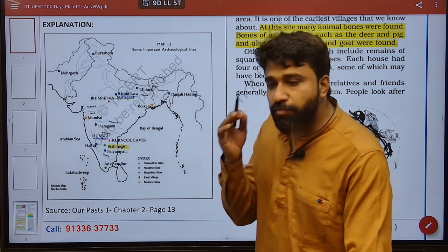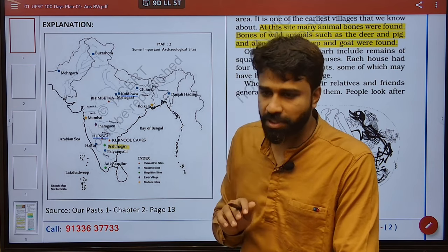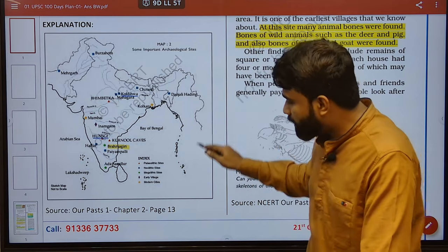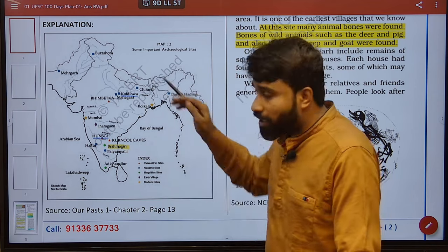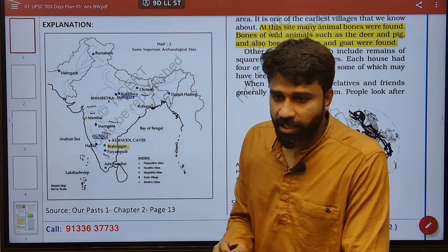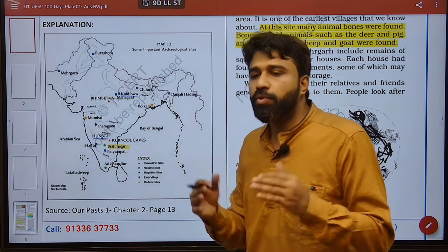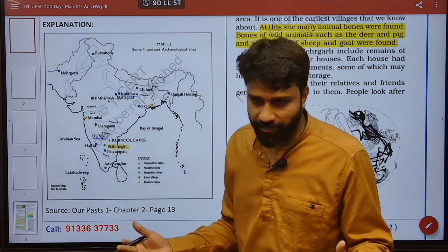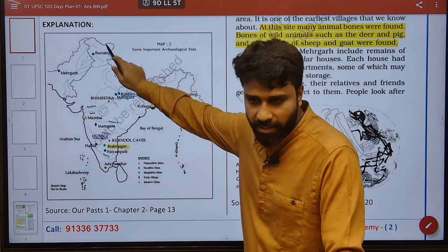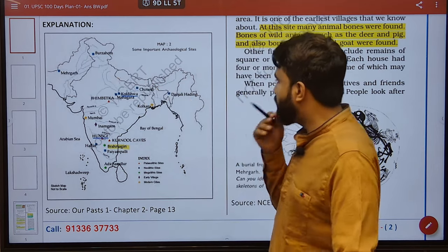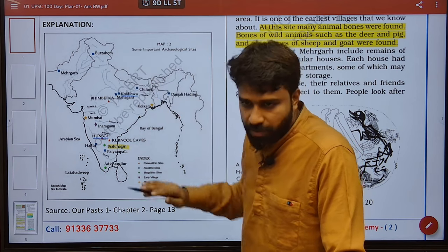In the 2019 prelims, it was given as a wrongly matched question. The actual matching was in the 6th class NCRT, clearly mentioned on page 18, that Burzahom contains pit houses in which people used to dig deeper into it and stay there to sustain themselves from extreme cold temperatures. That is why this is famous — it is a unique space.